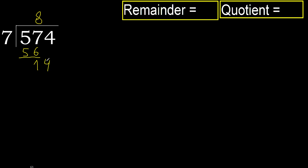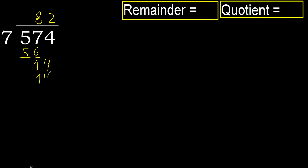Next: bring down 14. 7 multiplied by 2 is 14, which is not greater. Subtract. Next, there is no remaining number, therefore finish it.